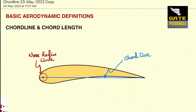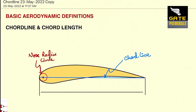Having found the chord line, one can easily find the distance between the leading edge and the trailing edge like this. If we find the distance between the leading edge and the trailing edge, this is what is called chord length. And it is denoted by a symbol C.